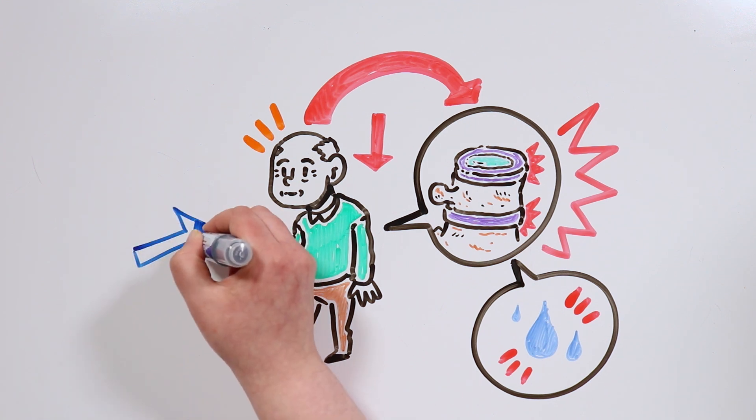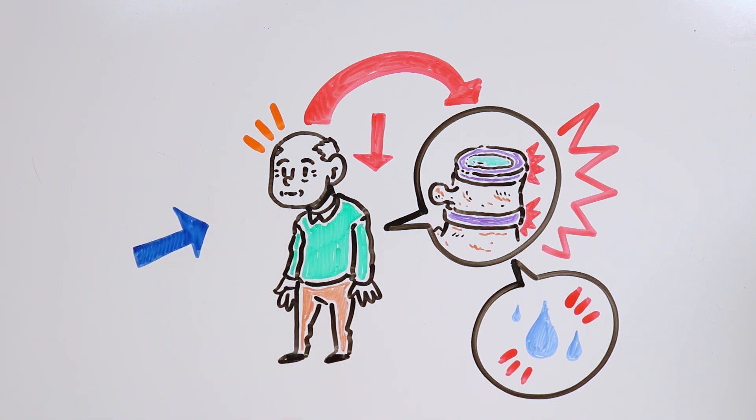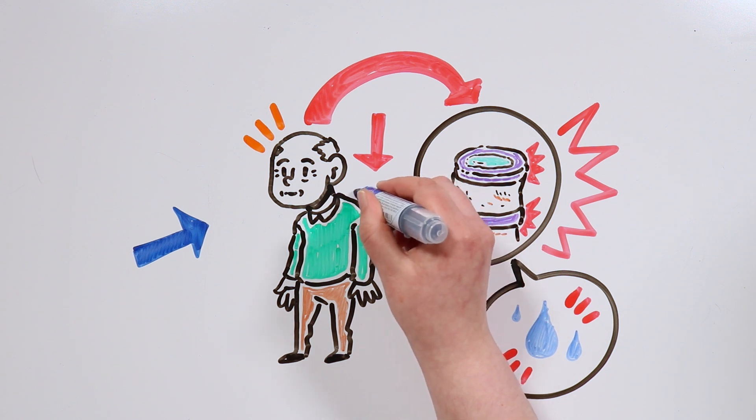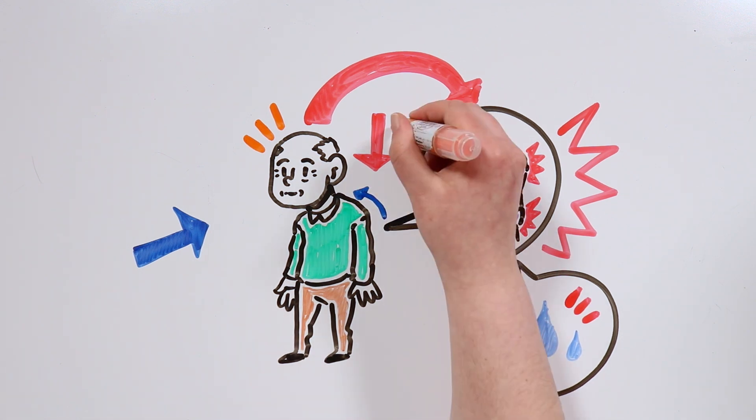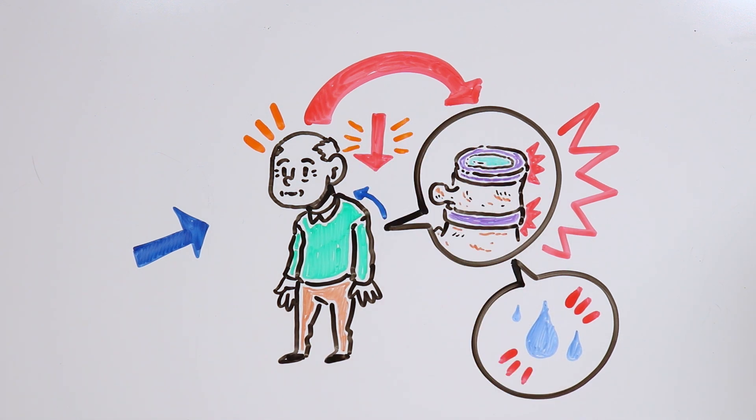And if we also add other natural changes that occur due to old age, such as the spinal column becoming more curved, then the change in height becomes even more noticeable.